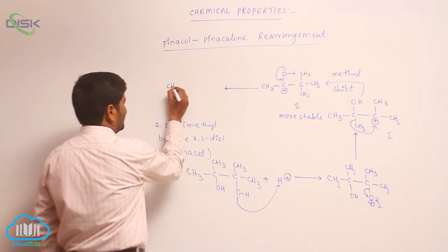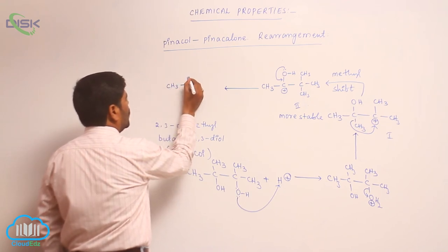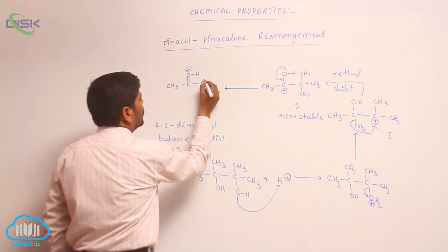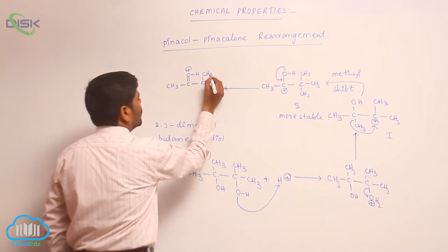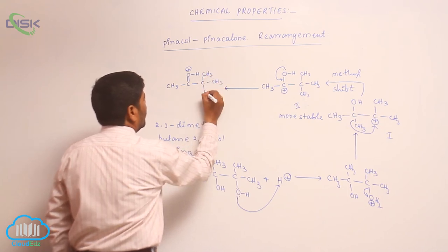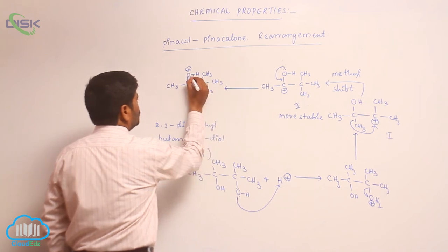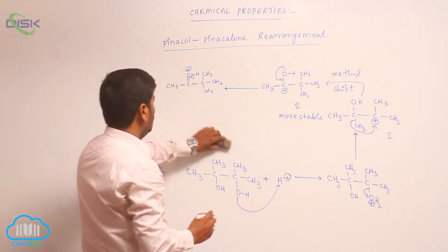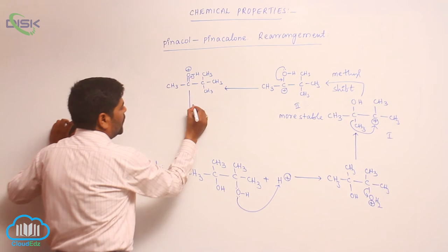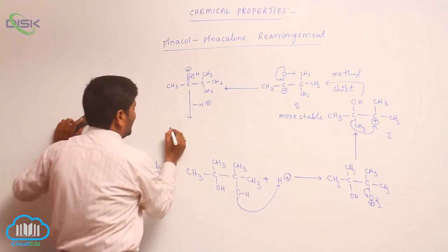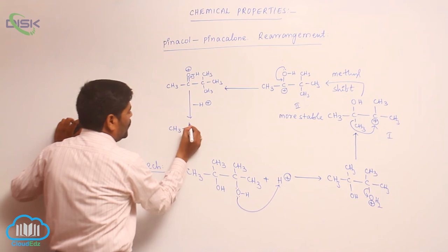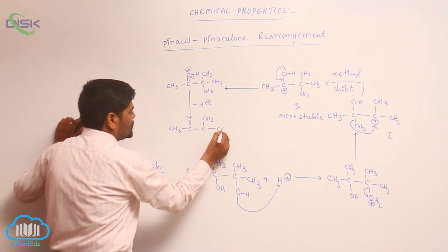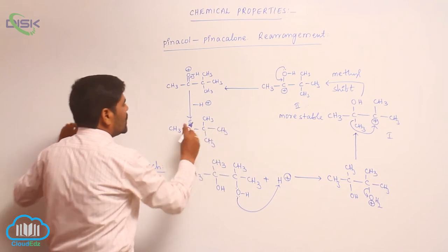The second intermediate structure is more stable than the first, because the oxygen lone pair of electrons is involved in resonance with the positive charge on carbon. The carbocation now carries CH₃ groups. Then loss of H⁺ takes place from this intermediate, since the reaction occurs under acid catalysis, giving a C=O double bond product.